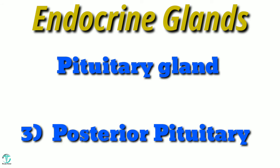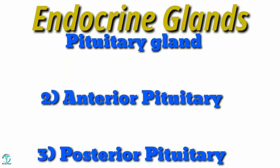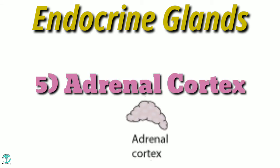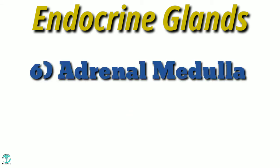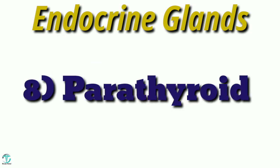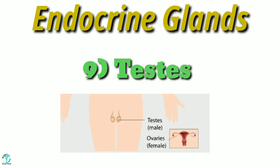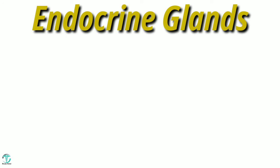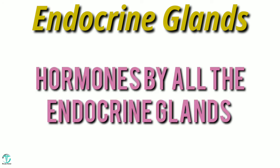The glands we will cover are: first hypothalamus, second anterior pituitary, third posterior pituitary — both parts of the pituitary gland — fourth thyroid gland, fifth adrenal cortex, sixth adrenal medulla, seventh pancreas, eighth parathyroid, and ninth testes and ovaries. Now we will study the hormones secreted by all these glands.